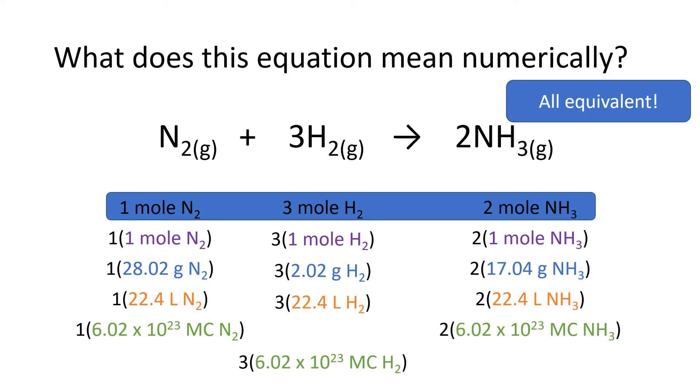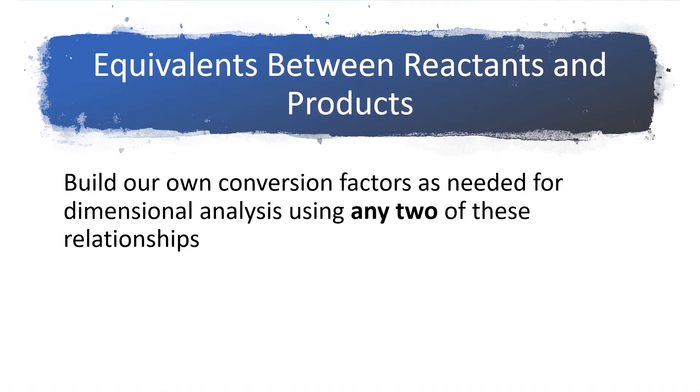Well, if they're equivalent, that means we can write a conversion factor from them. We can take one of these and stick it in the bottom of our conversion factor. And we can take a different one and stick it in the top of our conversion factor. So this approach gives us a way to write equivalence between reactants and products. And we're going to build our conversion factors as needed for the dimensional analysis by using any two of these relationships. And we're going to build these conversion factors by taking the coefficient from the balanced equation and multiplying it times any one of the four things that we have on the radiation sign. And the way we decide how to pull these things is just whatever we need to make units cancel out.